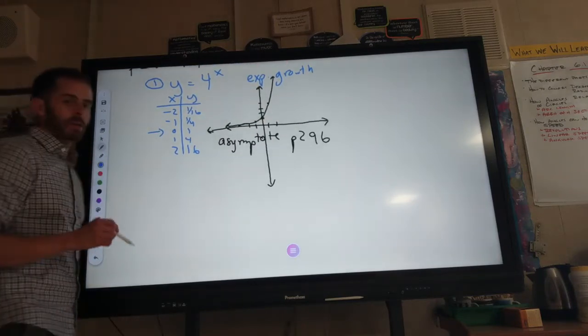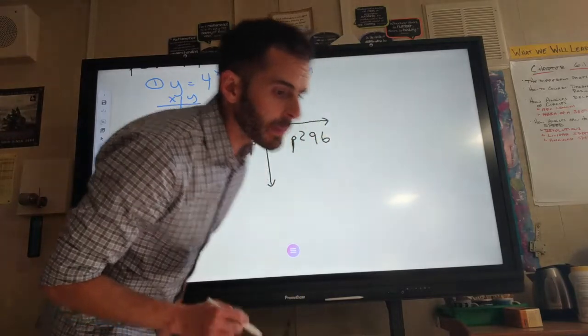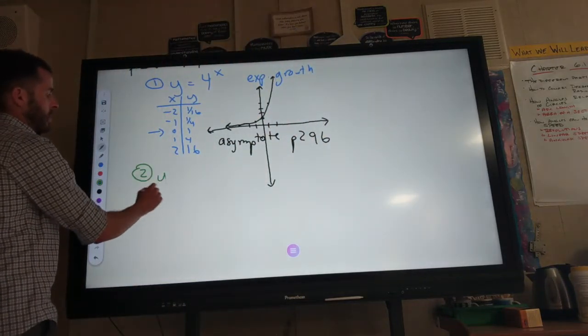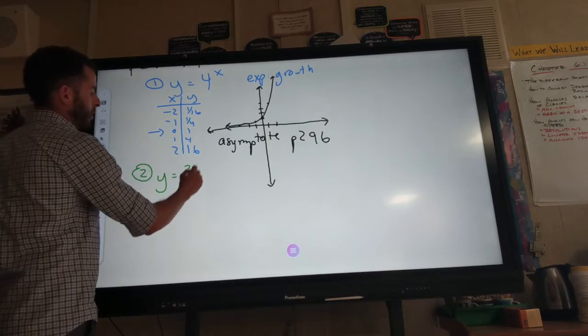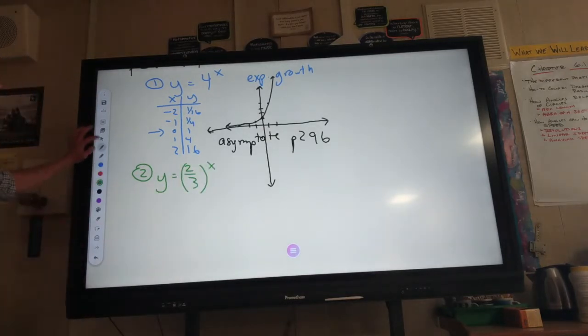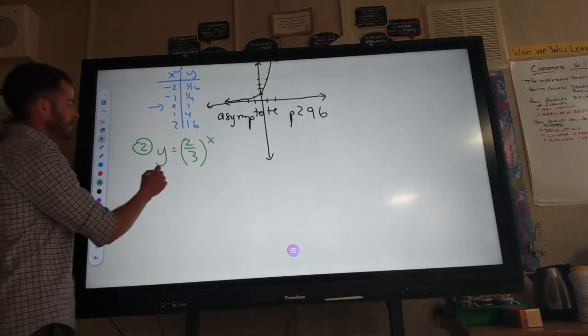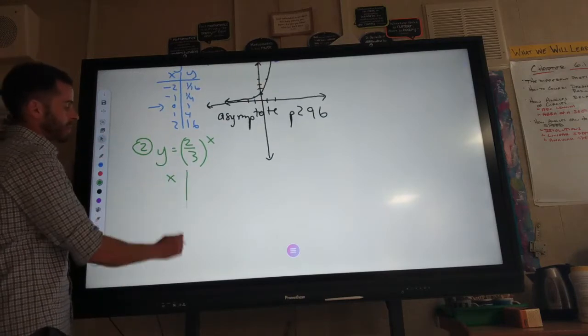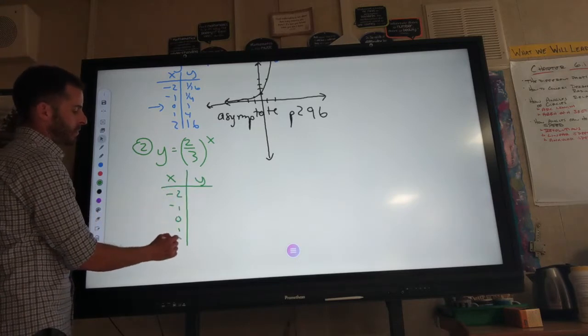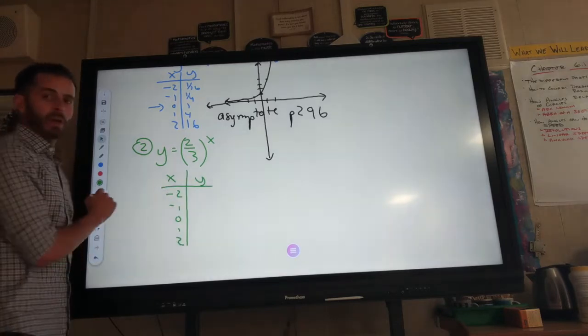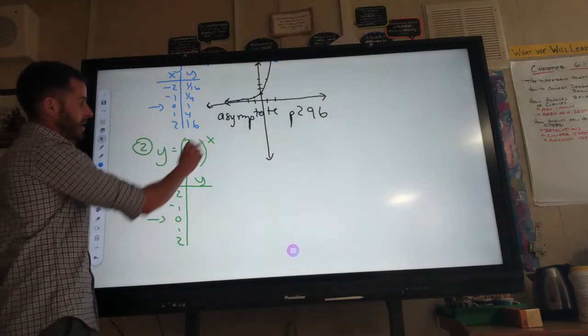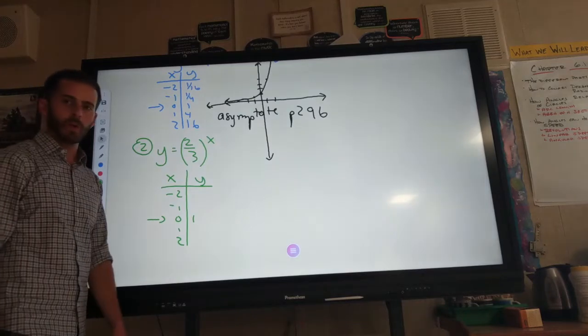Let's try number 2 because you might be afraid of fractions. y equals 2 thirds, that fraction being raised to the x power. Well, guess what? No tricks here. I have my x, I have my y. I want you to pick negative 2 through 2. So, let's start in the middle with 0. Anything to the 0 power is 1. Easy.